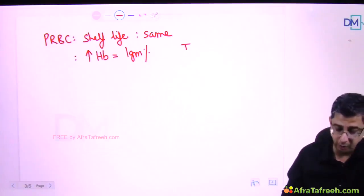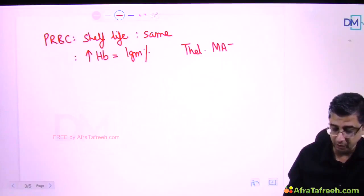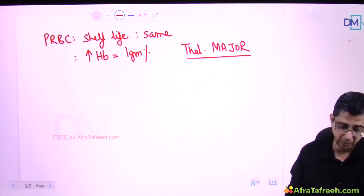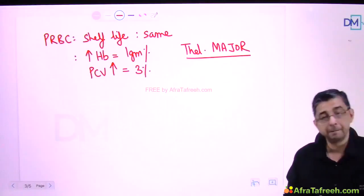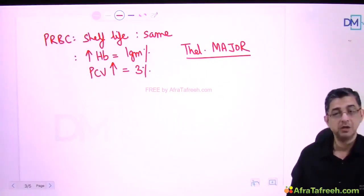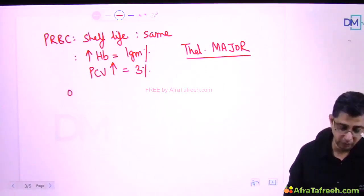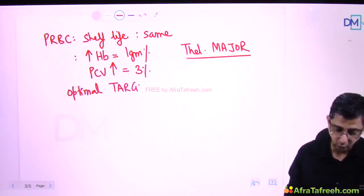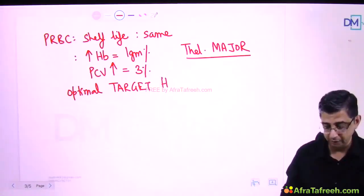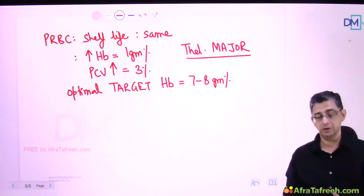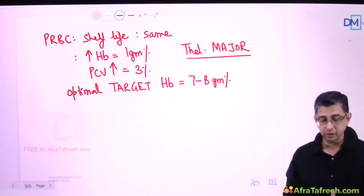Giving packed RBCs avoids volume overloading. In a thalassemia major patient, I do not need whole blood - I need to give packed RBCs on a recurrent basis, upgrading hemoglobin by one gram percent or hematocrit - also called packed cell volume - by three percent. The main advantage of packed RBCs over whole blood is avoiding the volume overloading component.